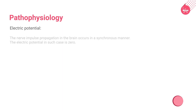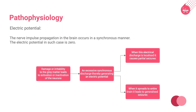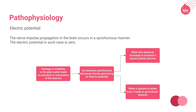Let us now discuss another postulated theory of epilepsy: the electric potential mechanism. In this theory, it is believed that under normal conditions, nerve impulse propagation in the brain occurs in a synchronous manner, and the electric potential in the brain remains zero. Damage or irritability to the gray matter leads to activation or inactivation of neurons, causing an excessive synchronous discharge and thereby generating an electric potential. When this electrical discharge is localized, it causes partial seizures, and when it spreads to the entire brain, it leads to generalized seizures.